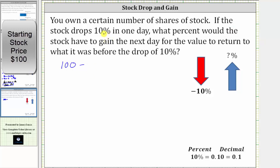To find 10% of 100, we convert 10% to a decimal and multiply, which gives us minus 0.1 times 100. Simplifying, we have 100 minus 0.1 times 100 is 10, and 100 minus 10 equals 90. After the 10% drop in price, the share price is now $90 per share.